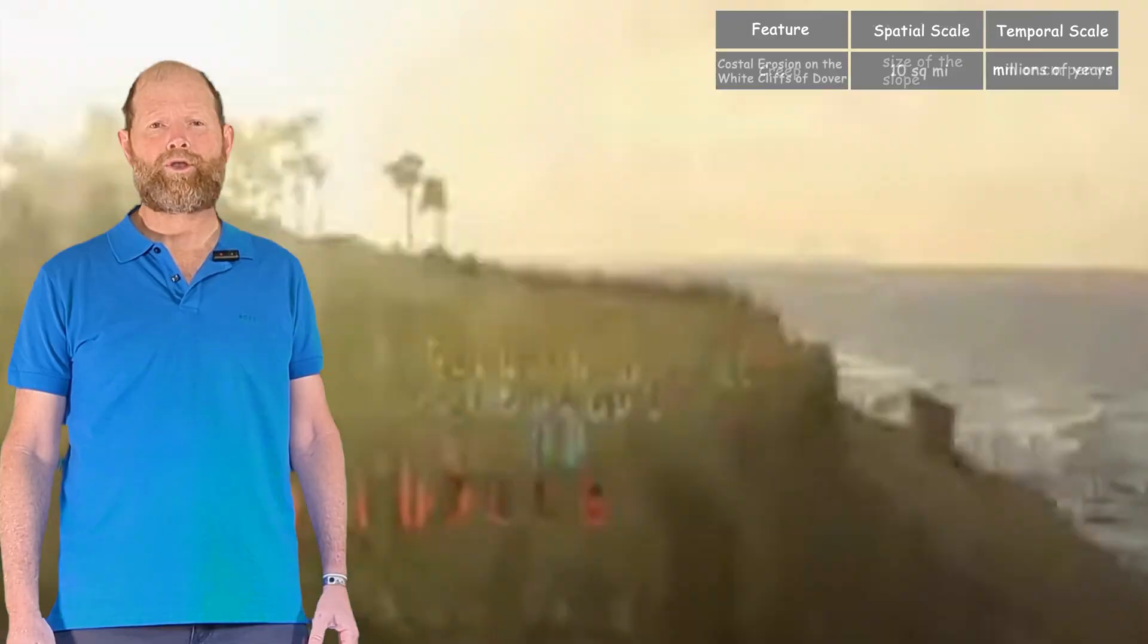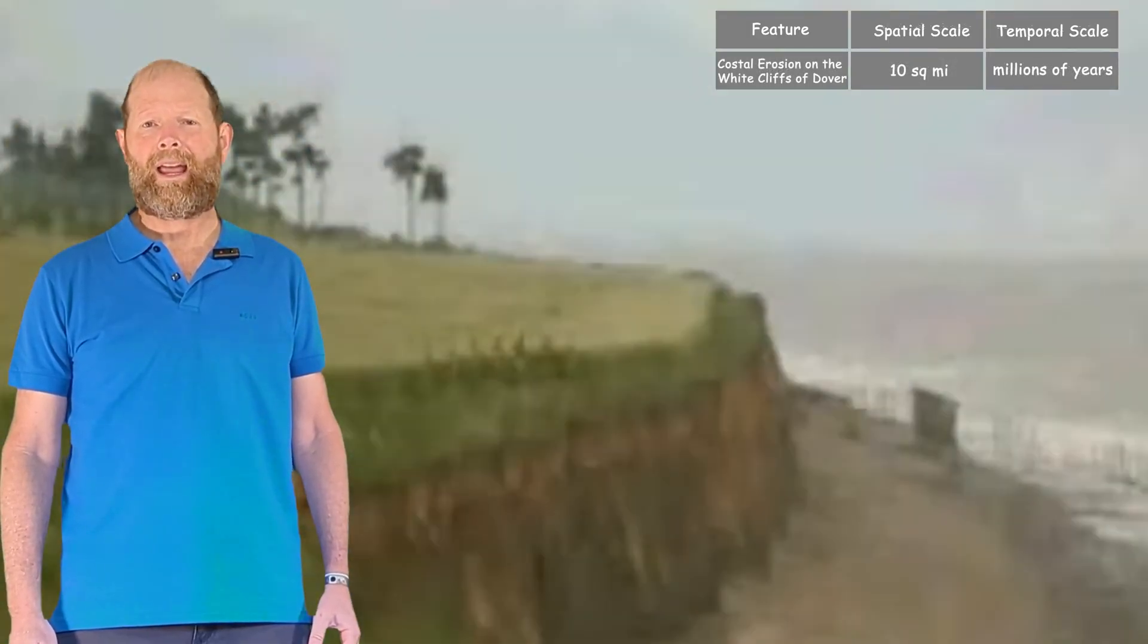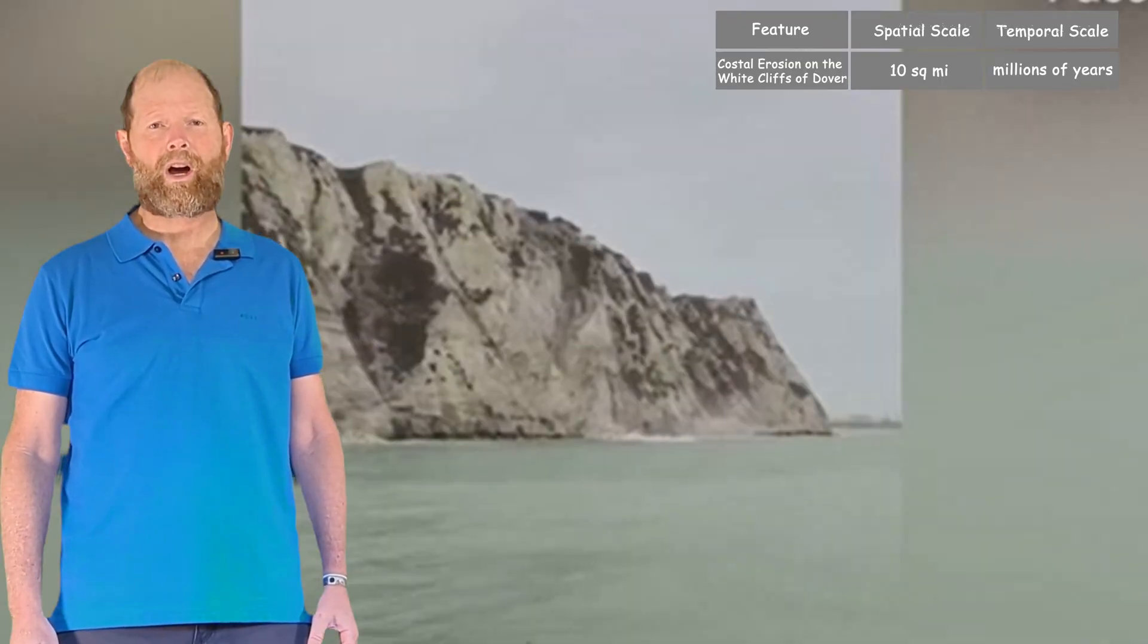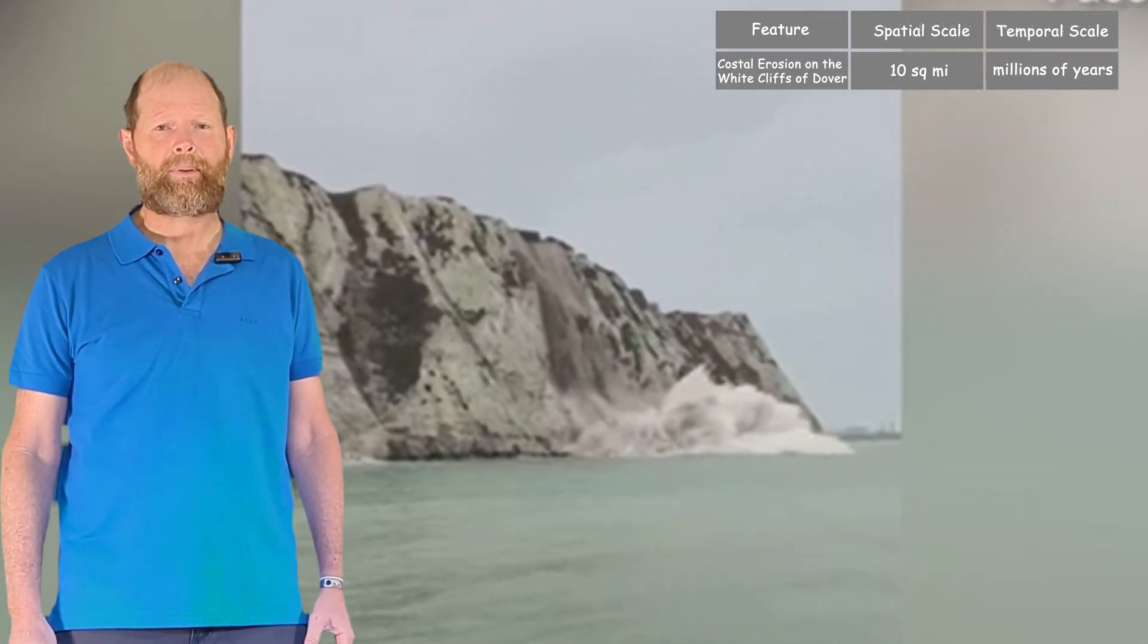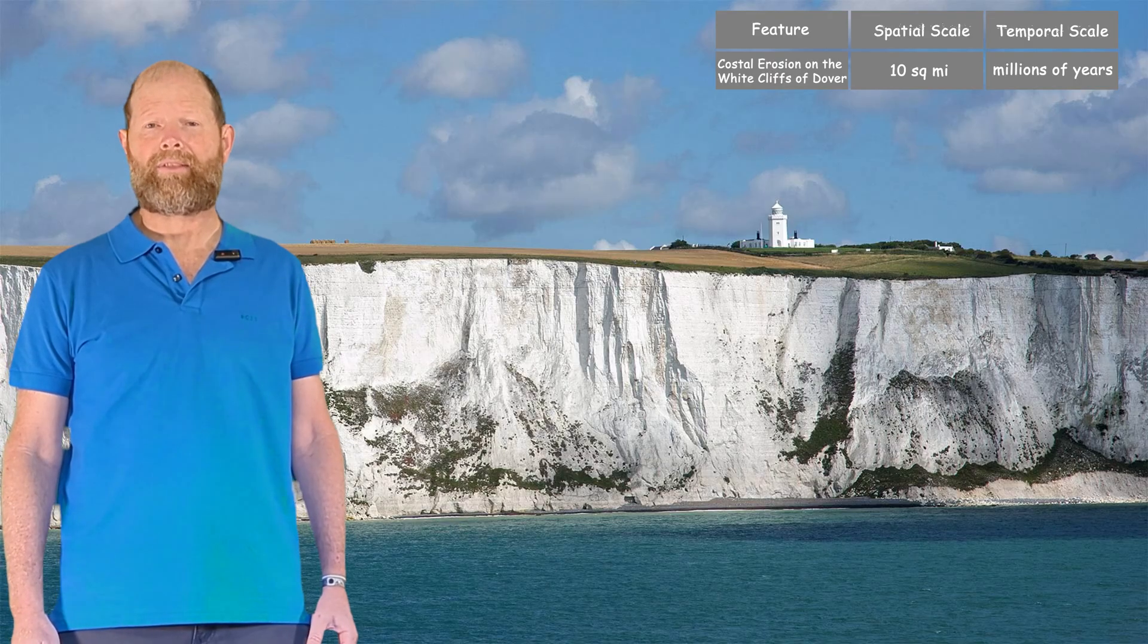Finally, we have coastal erosion, which involves waves battering against the shore, carrying away the weathered sediment. This can shrink beaches or wear away cliffs. We see this quite spectacularly at places like the White Cliffs of Dover on the southeastern coast of England.